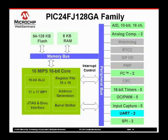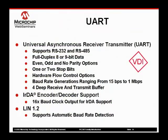Now we will begin our coverage of the serial communications peripherals on the PIC24F family. We will start with the UARTs. The PIC24FJ128GA family we are basing our discussion on includes two independent UART channels. The Universal Asynchronous Receiver Transmitter, or UART, has been a standard feature on many Microchip products for many years. It supports both RS232 and RS485 protocols.